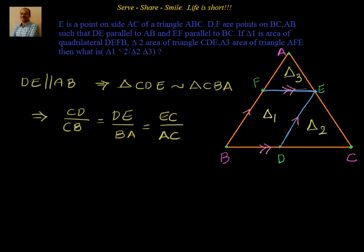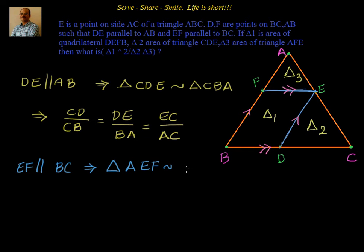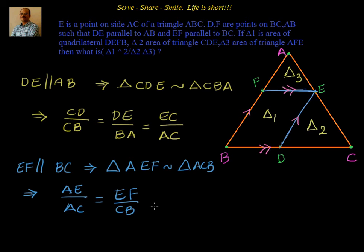Now let's find our other similar triangle. We have EF parallel to BC — we have been told that. So EF parallel to BC means triangle AEF is similar to triangle ACB. Again, in similar triangles corresponding sides are in proportion, so we can write: AE/AC = EF/CB = AF/AB. This is what we are able to reach using the two pairs of parallel lines.